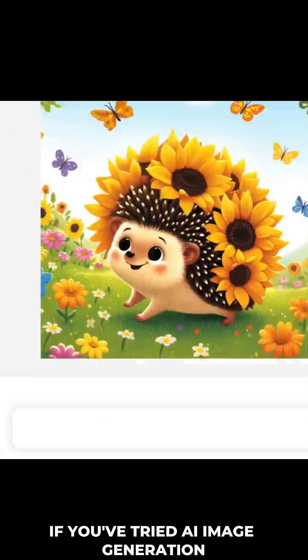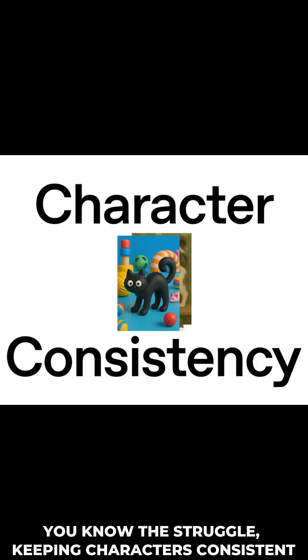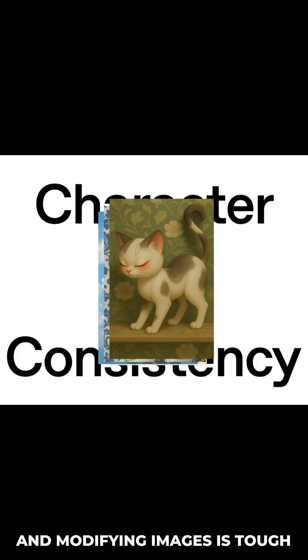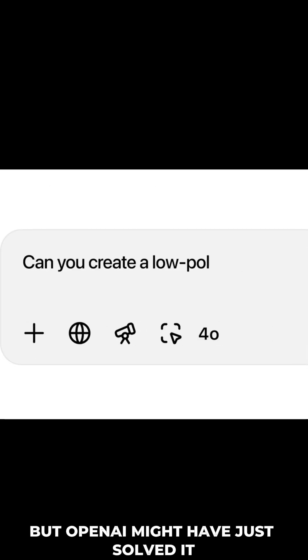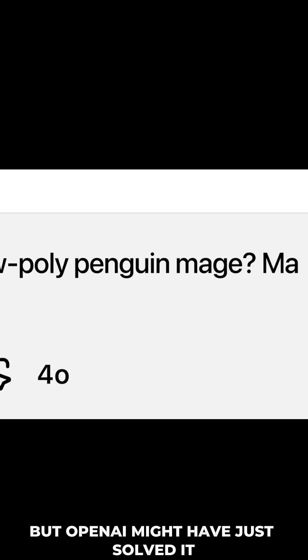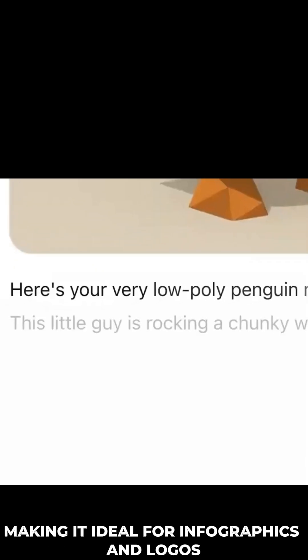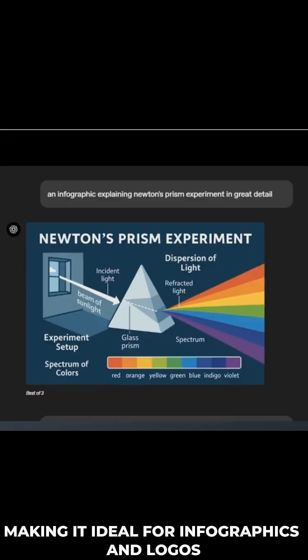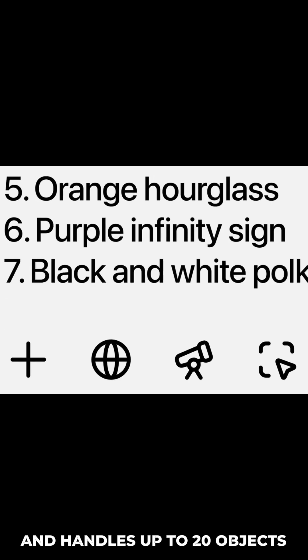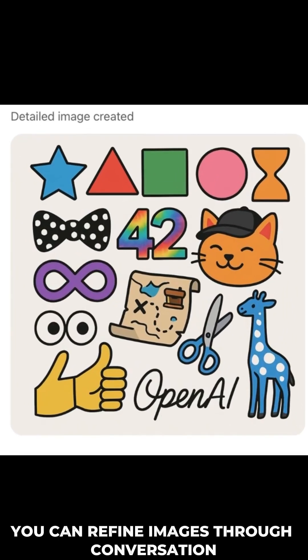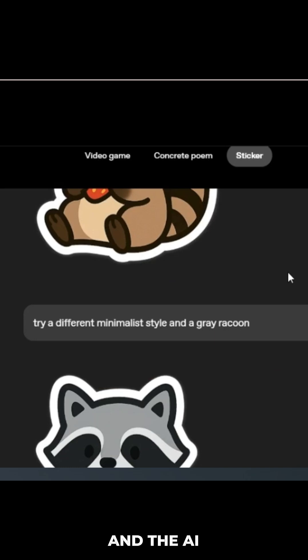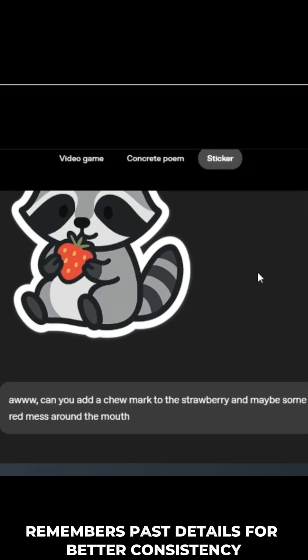If you've tried AI image generation, you know the struggle. Keeping characters consistent and modifying images is tough. But OpenAI might have just solved it. They've introduced a native image generator within ChatGPT powered by GPT-4o. It can render text accurately and blend precise symbols with images, making it ideal for infographics and logos. It understands unusual prompts better and handles up to 20 objects. You can refine images through conversation, and the AI remembers past details for better consistency.